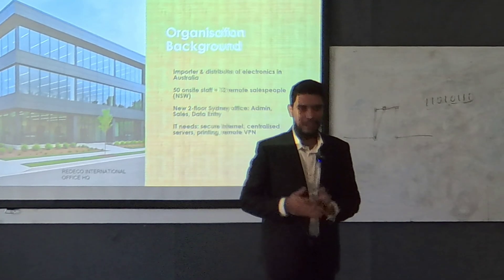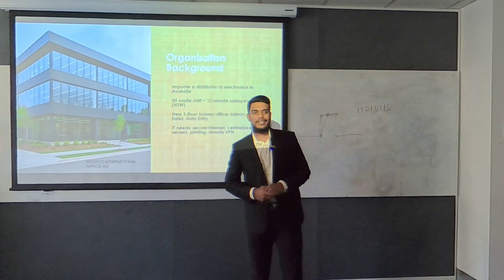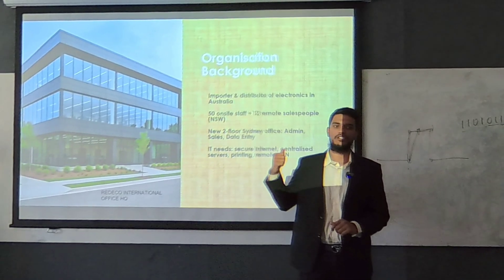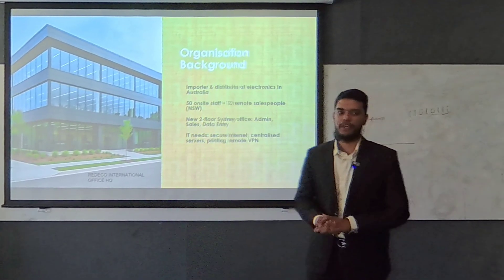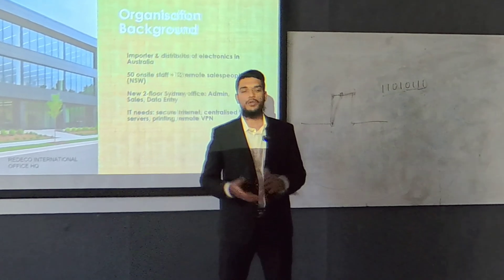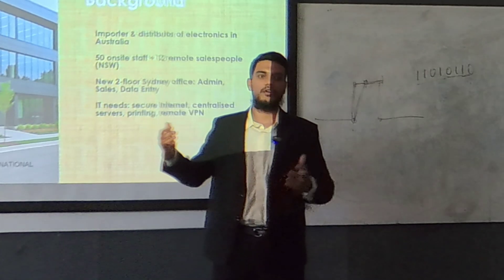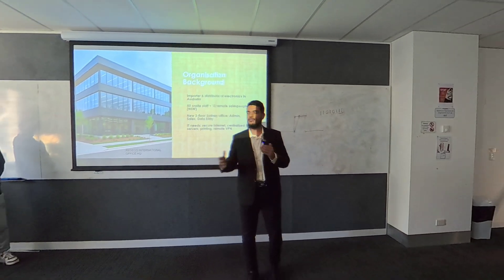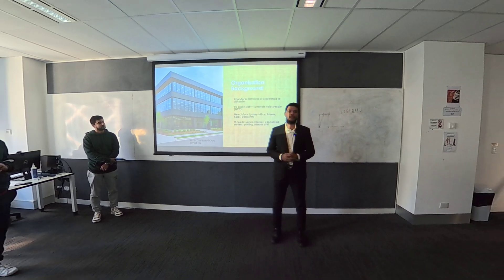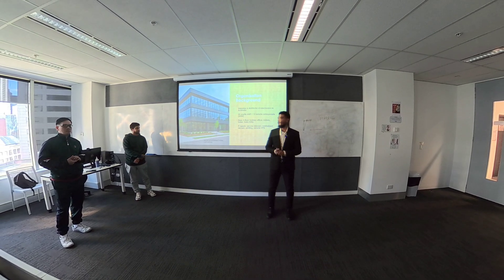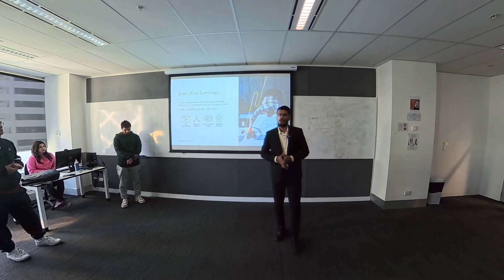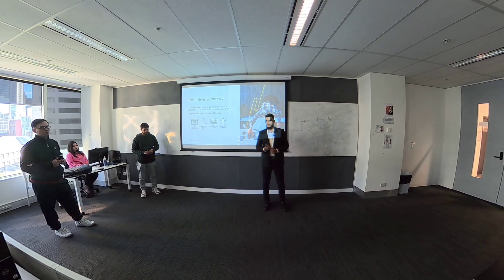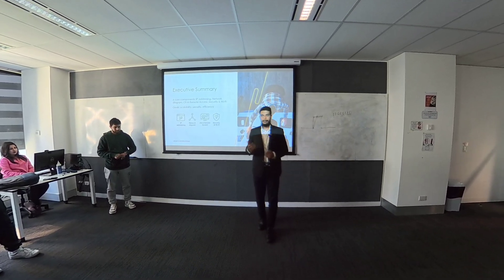That's the real-life example of why IP addressing is important — it identifies the exact device we want to send messages to. For today's presentation, we're using the example of Radical International, based in New South Wales, Australia, which imports different electrical devices. This organization has many departments — IT, admin, controls, and sales — using lots of devices that need to communicate with each other. Our group broke down the full network diagram for this organization. Just like a wrong home address means you don't get the right delivery, a wrong IP address means you can't reach the right device.